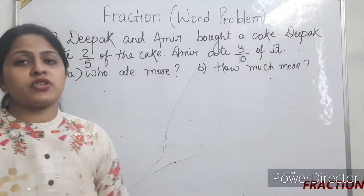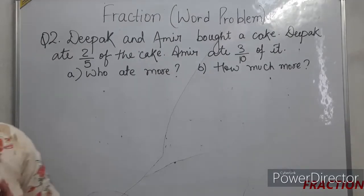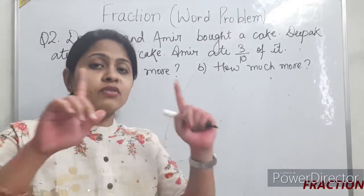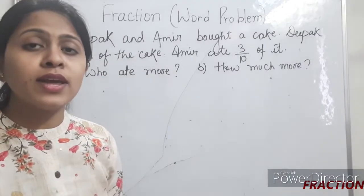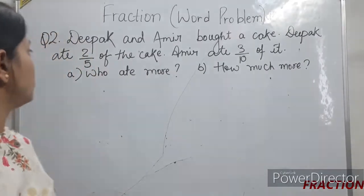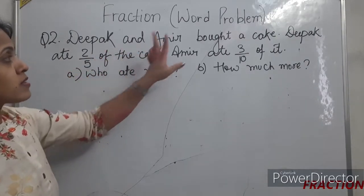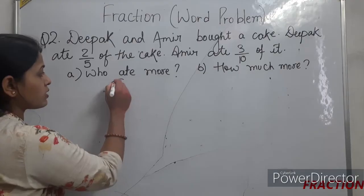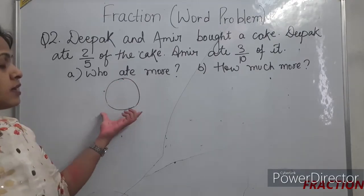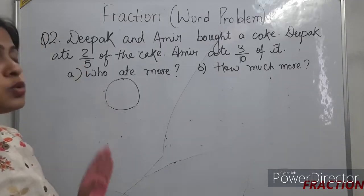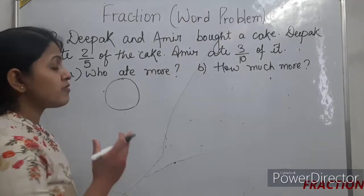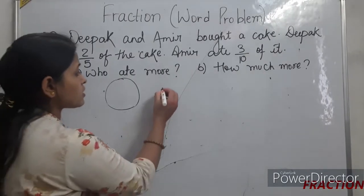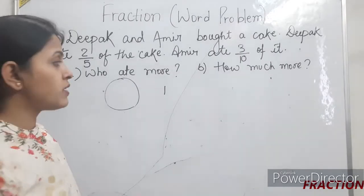First of all we have to see what is the whole part. A fraction is a part of a whole — anything which is complete is whole. Here the whole is one cake. They both are talking about a single cake. Deepak has eaten 2 by 5 of the cake, meaning 2 by 5 of one cake.